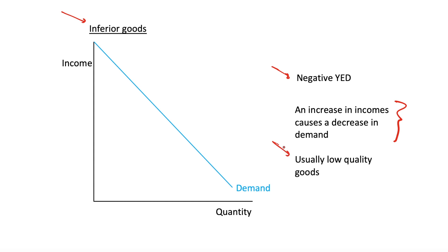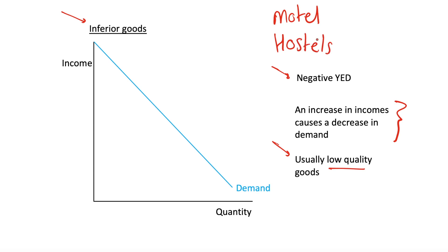We can look at the example of low quality goods. If incomes increase, people are going to spend more on things, but they might not spend more on low quality goods — instead they will substitute away from them and buy high quality goods. Using the hotel example, if we think of motels or hostels — very cheap accommodation costing just a few pounds per night — if our incomes increase we might stop paying for hostels and instead buy hotels, or if incomes increase a lot, luxury hotels.